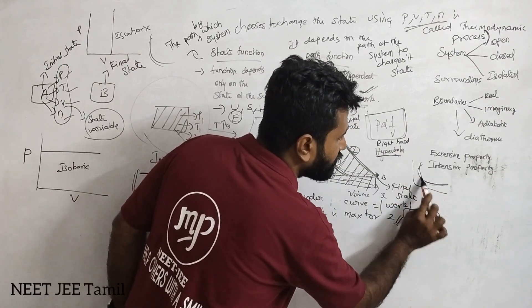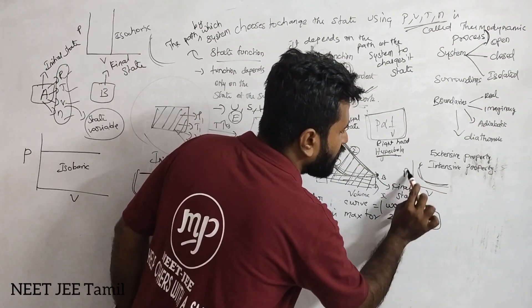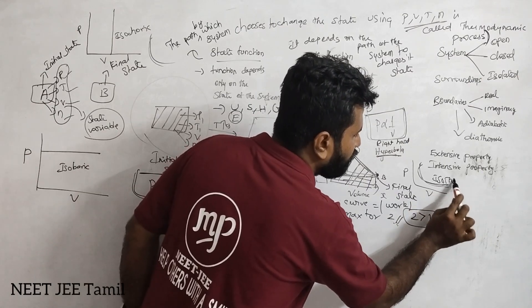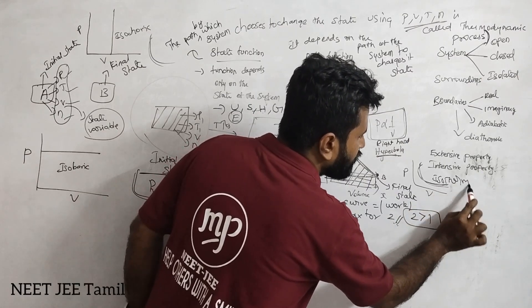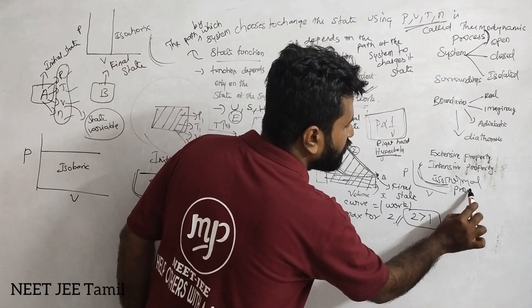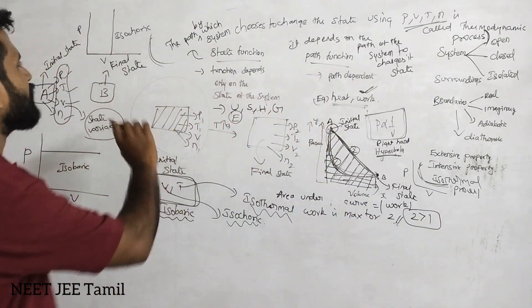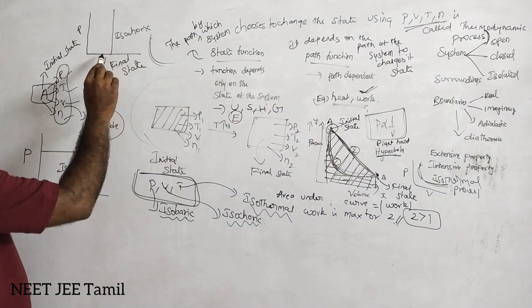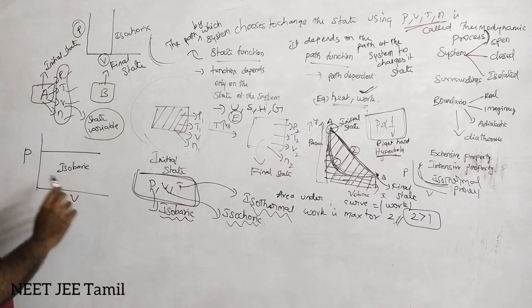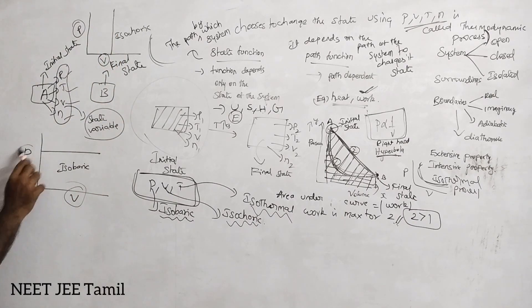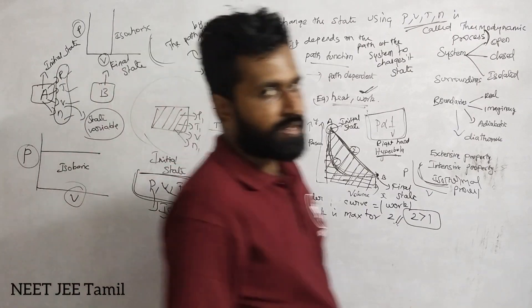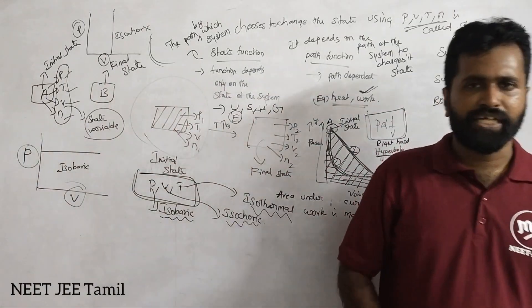Here is the graph — what is pressure-volume? Isothermal graph. Isothermal process: it's a hyperbola. Isochoric process: volume constant, graph is a straight line. Isobaric process: pressure constant, graph is a straight line too.